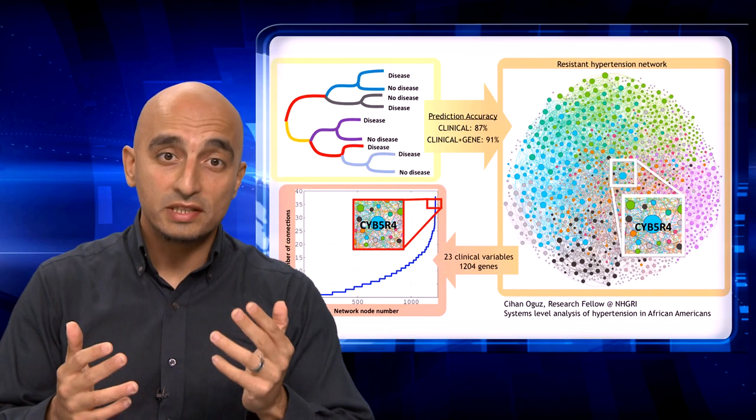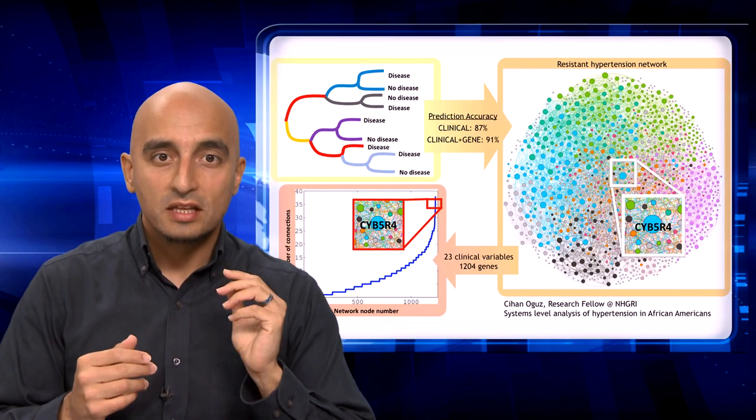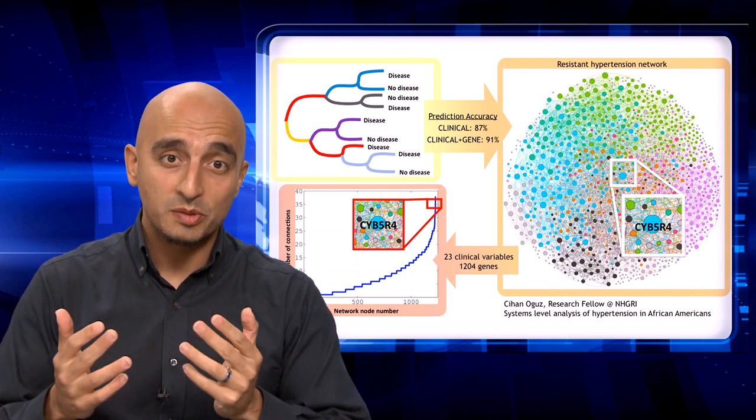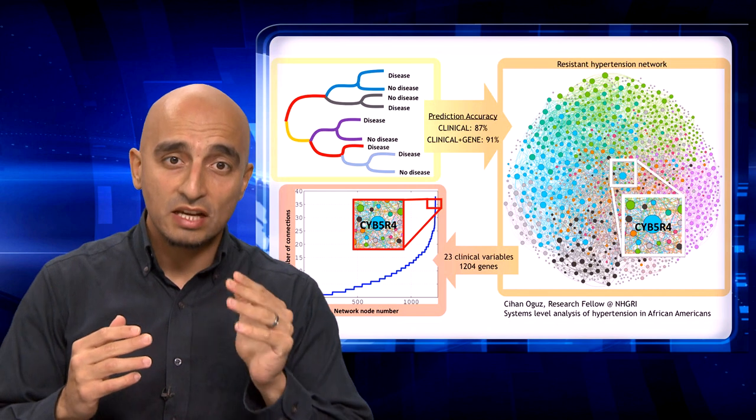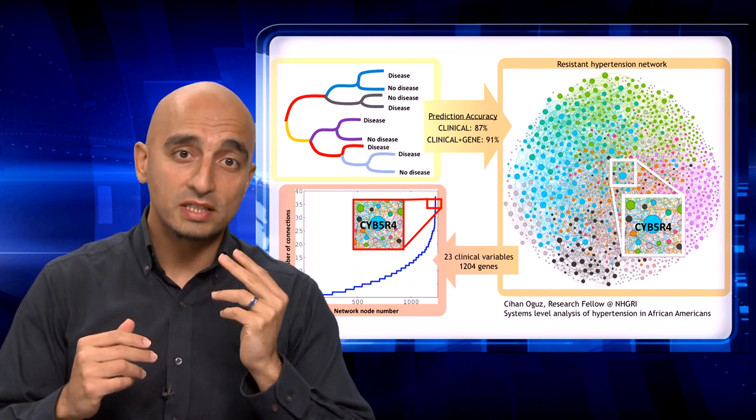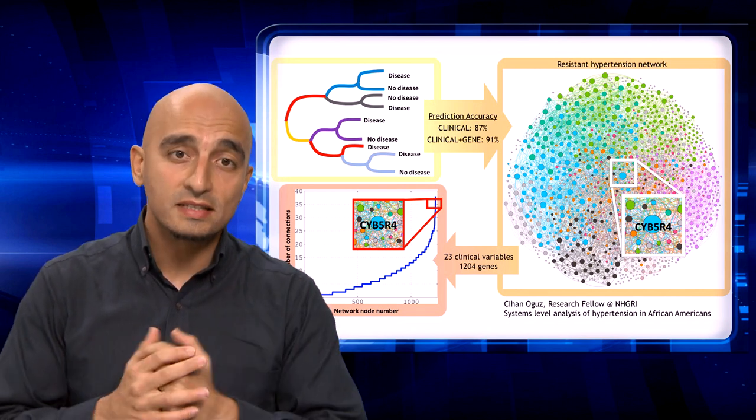Resistant hypertension is persistently elevated blood pressure despite concurrent use of multiple antihypertensive medications. It substantially increases the risk of heart attack, congestive heart failure, chronic kidney disease, and stroke.